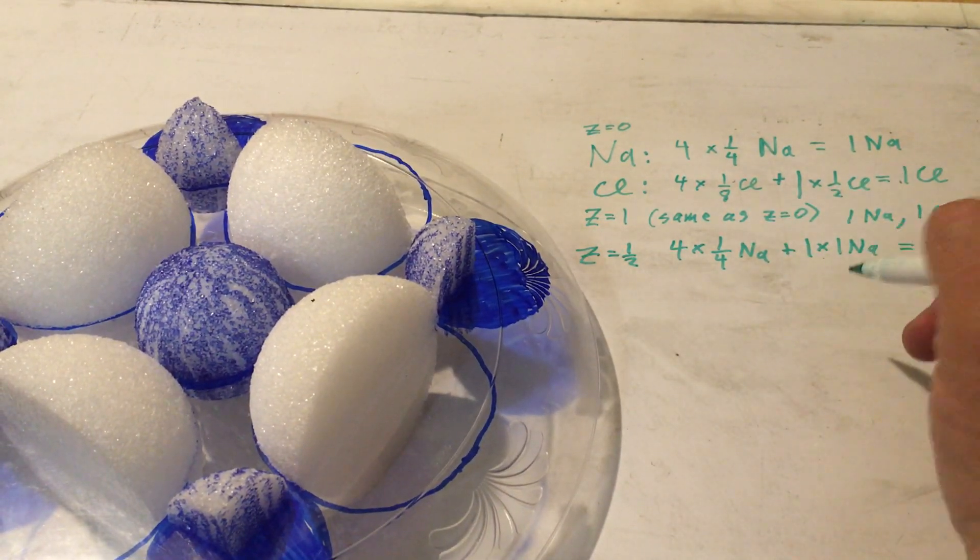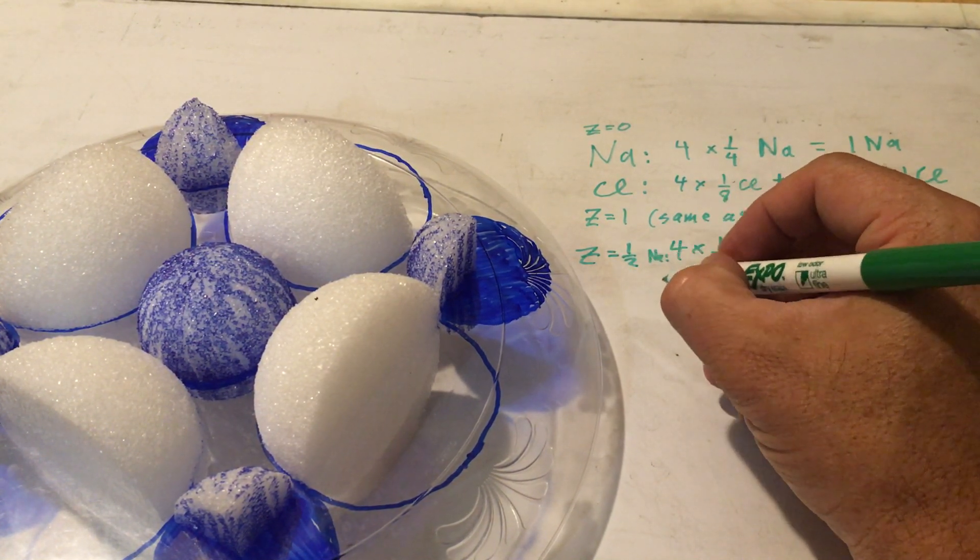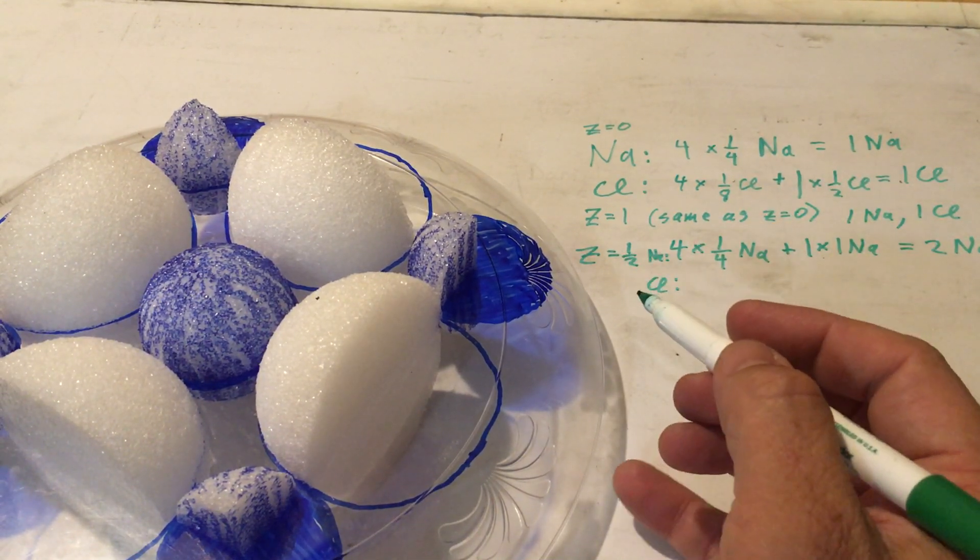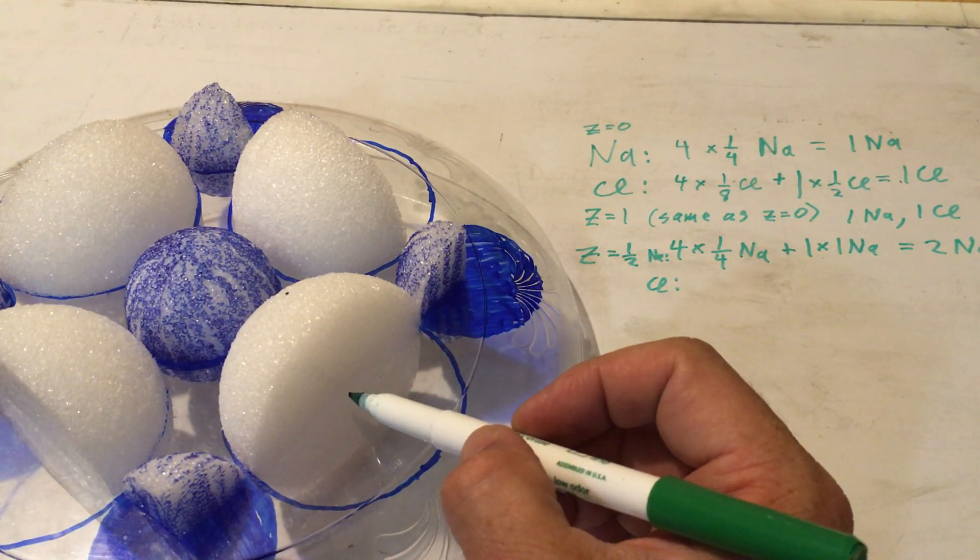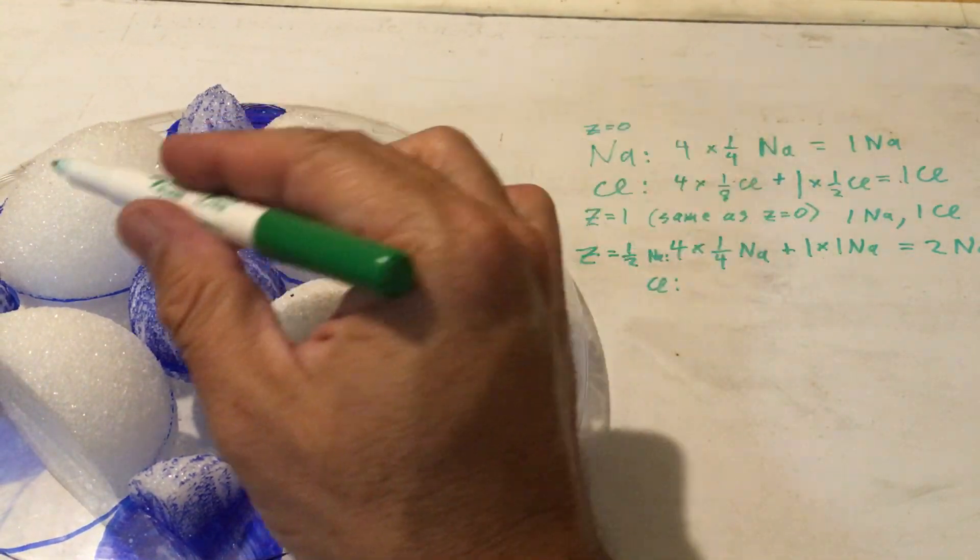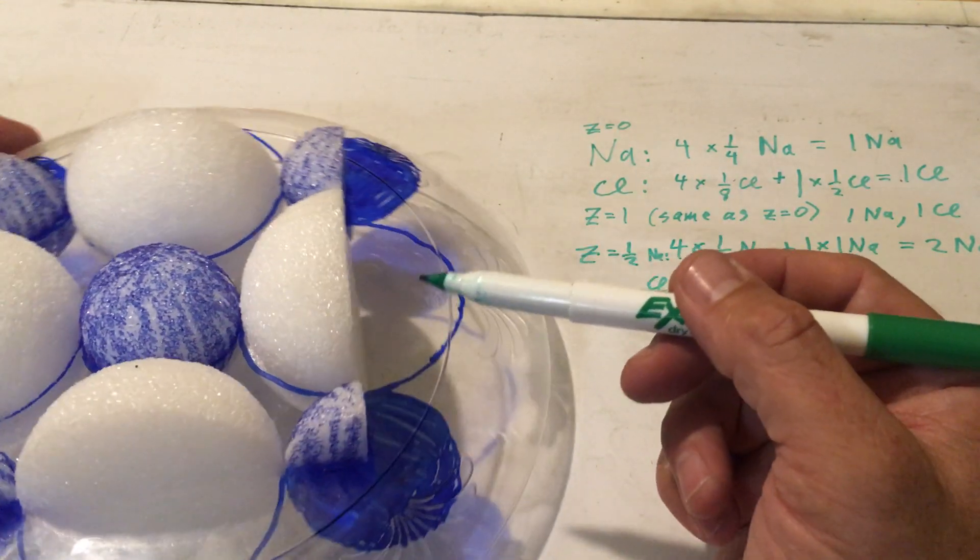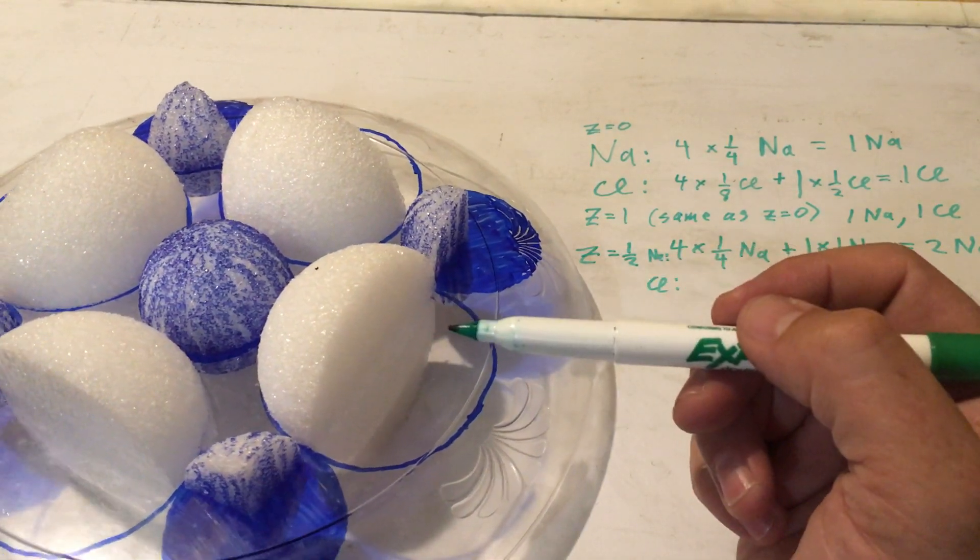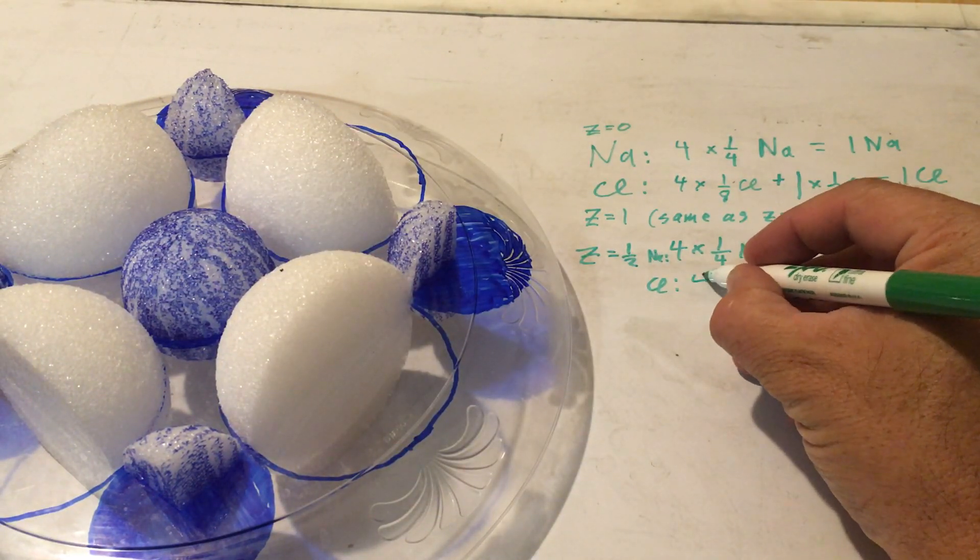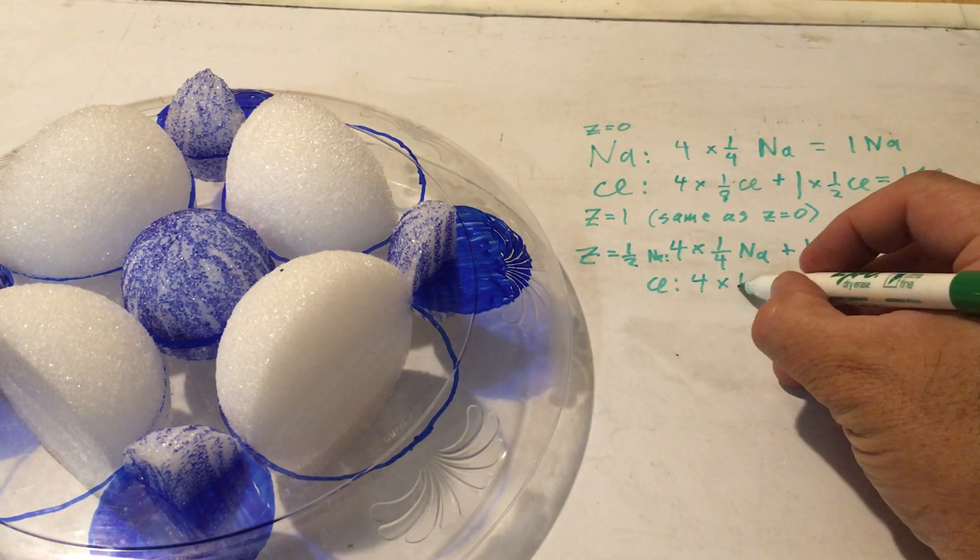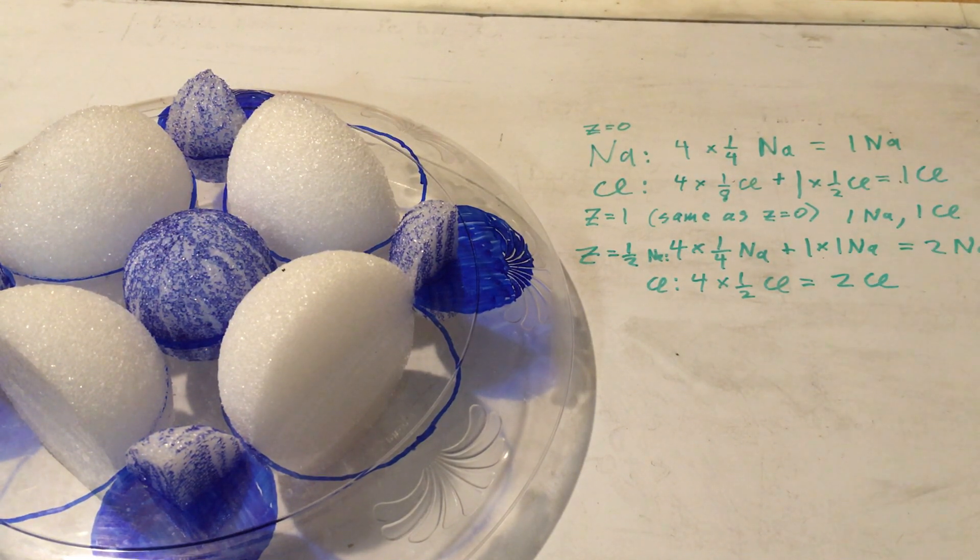And so what about the chlorides? So again, this is the sodium. And for the chloride, what we have are ions that are centered in the faces of the unit cell. There's one here, here, here, here on these four faces. And as you can see, there's half of a sphere from each of those ions within the boundaries of the unit cell. And I have four of these ions. So I have four times one half chloride gives me two total chloride ions.